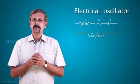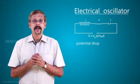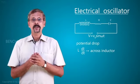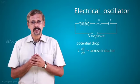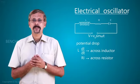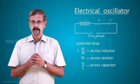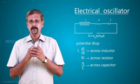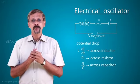What is the voltage across the inductance? It is given by L into dI by dt. And what is the potential drop across the resistor? It is equal to R into I. And the potential drop across the capacitor is equal to Q by C. When you add all these three voltages, you should get V0 sin omega t.